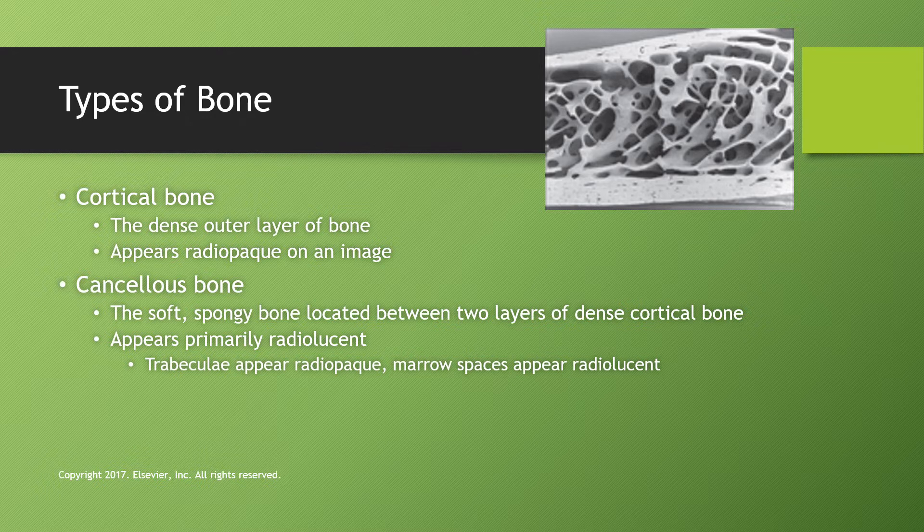The two types of bone we deal with in radiology are cortical bone, which is the dense outer layer that appears radiopaque or white on the image, and cancellous bone, which is the soft spongy bone located between two layers of dense cortical bone and appears primarily radiolucent. However, it has a lacy white or lattice appearance from the trabeculae, where marrow spaces, nerves, and blood vessels travel. Cortical bone is also referred to as compact bone, and the inferior border of the mandible is composed of it.